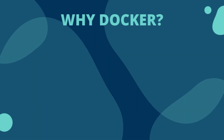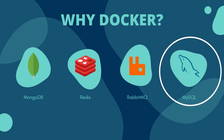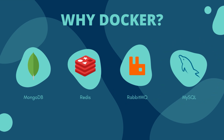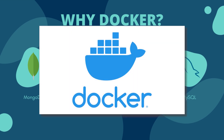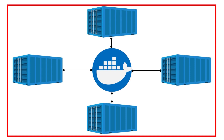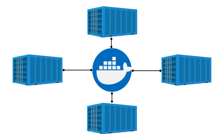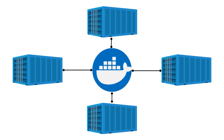We might be using different components for our application. For example, we may need MongoDB database, Redis for caching, RabbitMQ for messaging, MySQL database, and many other components. You may have noticed compatibility issues where some components need dependencies of a particular version that other components don't support. Docker is the best solution for these issues — we can run each component in separate containers with its own dependencies and libraries, all on the same machine. Containers are completely isolated environments.